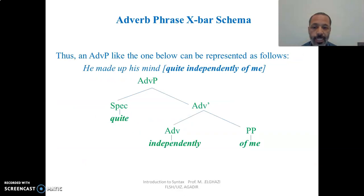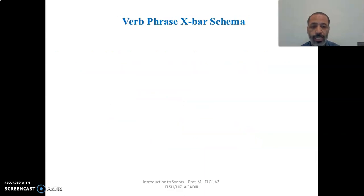In the sentence 'He made up his mind quite independently of me,' the adverbial phrase 'quite independently of me' has a specifier 'quite,' a head 'independently,' and a complement — the preposition phrase 'of me.' The head is inserted under the head node, the preposition phrase under the complement node, and 'quite' under the specifier node.